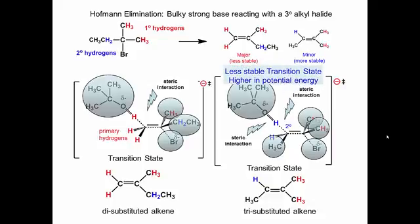The higher energy transition state means that the energy barrier to form the more stable alkene is greater than the energy barrier to form the less thermodynamically stable alkene. This reaction will be slower and thus produce the more stable alkene as a minor product.